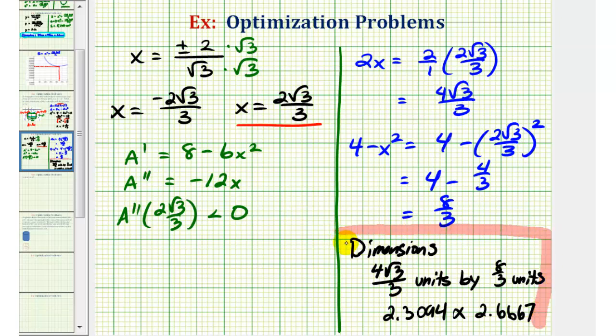But before we go, let's go ahead and find what that maximum area would be. And since the area of a rectangle is length times width, the maximum area would be equal to 4 square root 3 divided by 3 times 8 thirds. Notice nothing simplifies here. So the area would be 32 square root 3 divided by 9 square units.